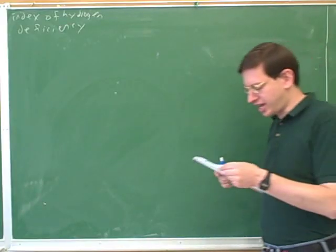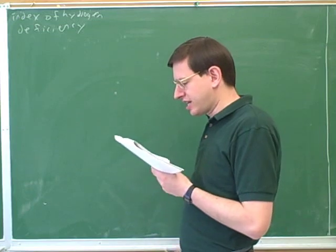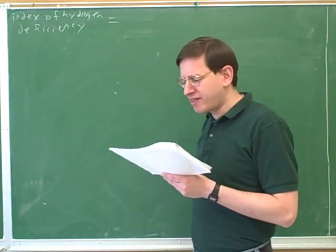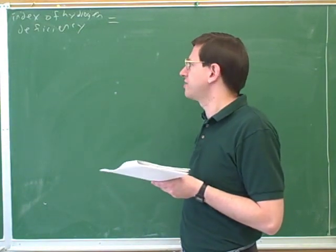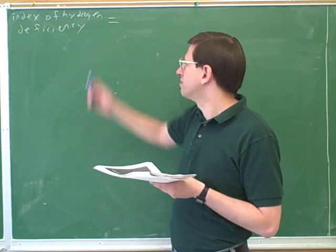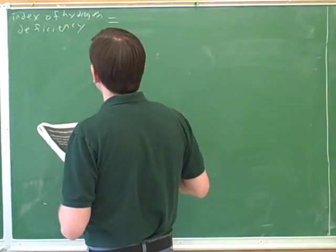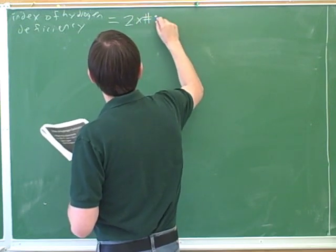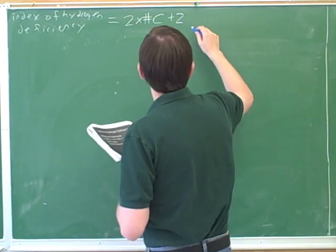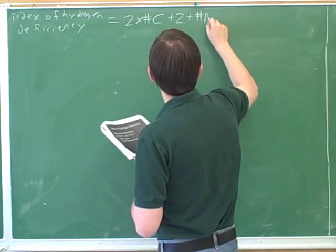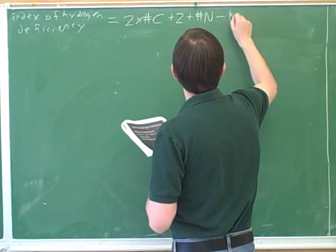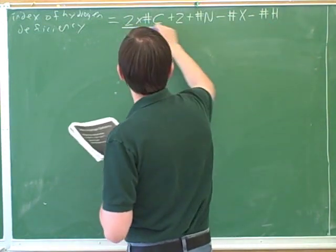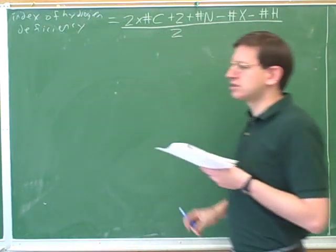One of the things we didn't talk about yesterday that your instructor covered was something called the index of hydrogen deficiency. Here's the formula for this index of hydrogen deficiency. In the past I've usually seen this called the degrees of unsaturation. So your textbook might call this the degrees of unsaturation, but your instructor called it the index of hydrogen deficiency. You need to know what the formula for that is. It's 2 times the number of carbons plus 2 plus the number of nitrogens minus the number of halogens minus the number of hydrogens divided by 2.